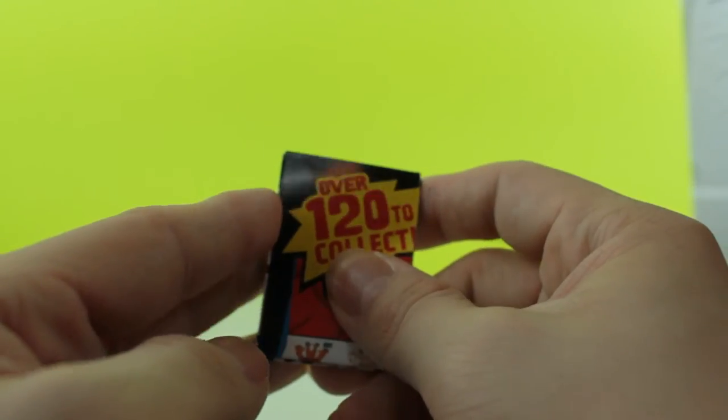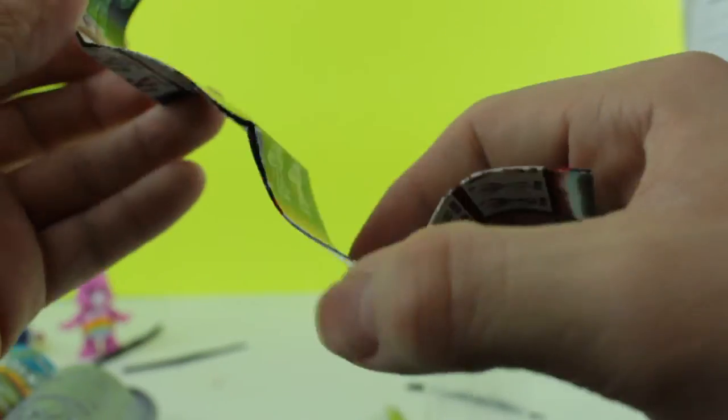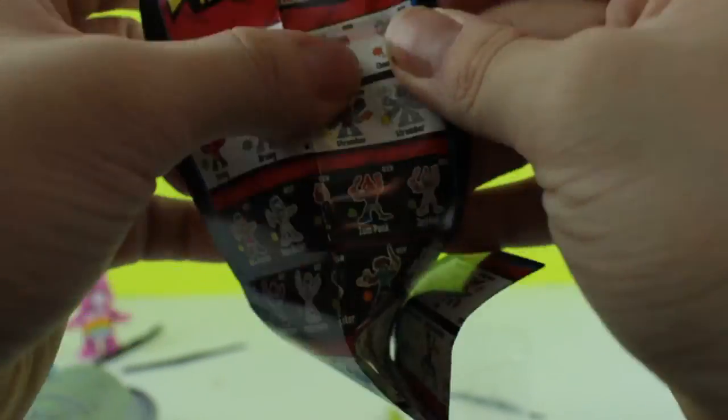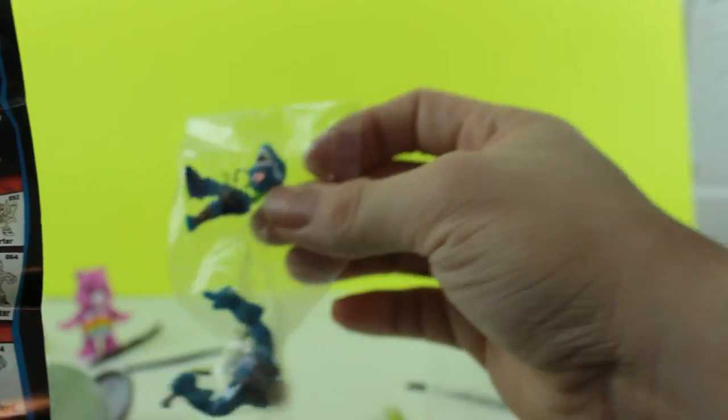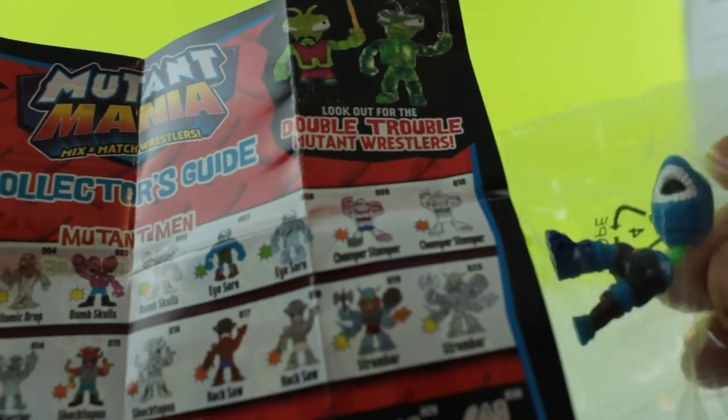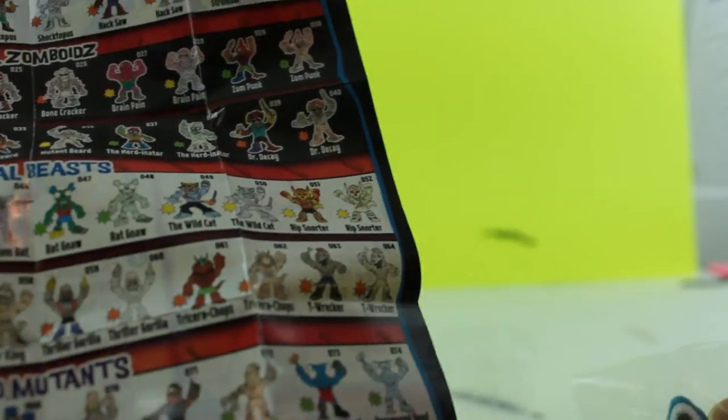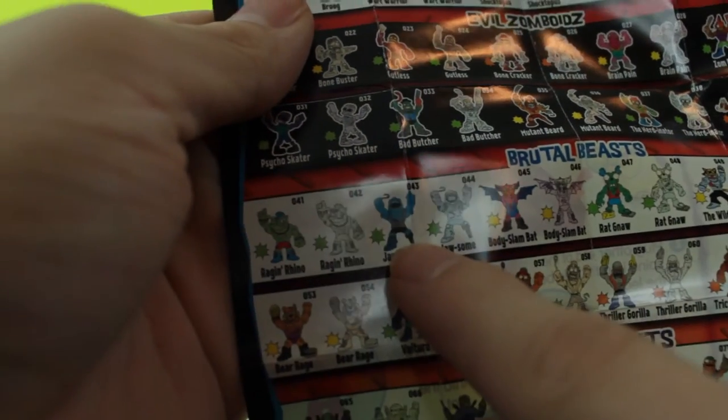Alright, over 120 to collect, huh? Let's see here. Looks like we got one with a Shark Head. I think we got Jawsome.